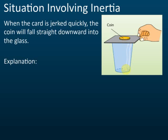Why does this happen? If you pull the card slowly, the coin will move together with the card. But if you jerk the card quickly, the coin will not move with the card — it will fall down into the glass. This is due to inertia, because inertia is the nature of all mass that resists the change of motion.